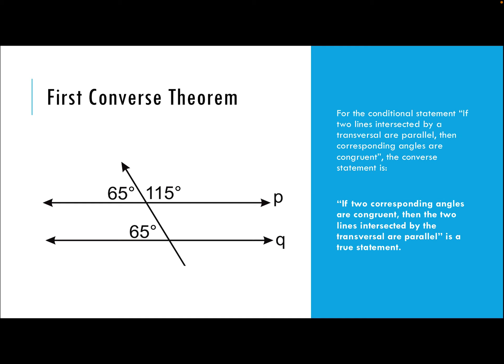When we look at corresponding angles, we have this 65-degree angle and this 65-degree angle. These are corresponding angles, and because those angles are congruent — meaning they have the same angle measure — we know that line P and line Q are parallel. We can mark them as parallel to each other. If we can establish a relationship between the angles, then we can determine if the lines are parallel.